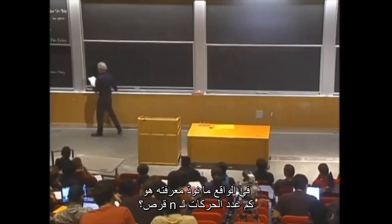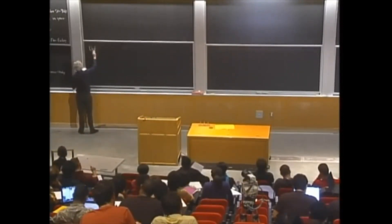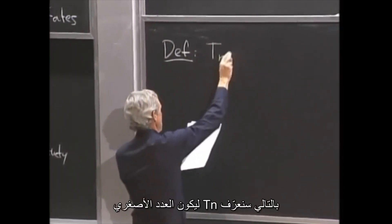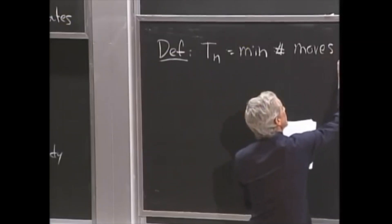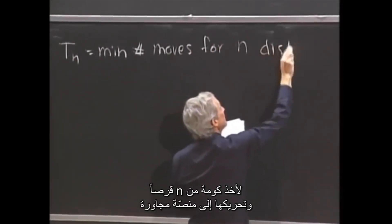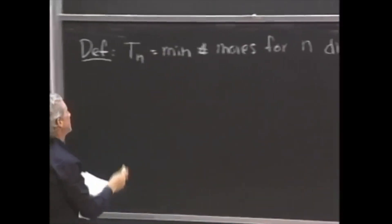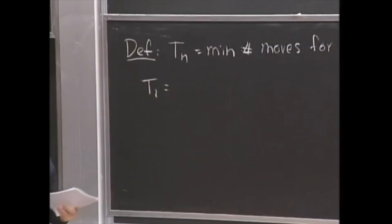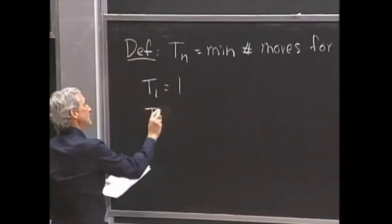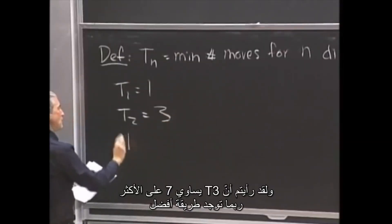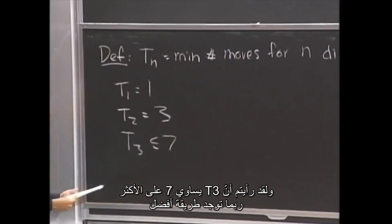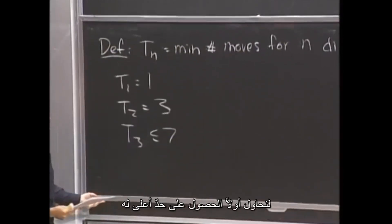What we'd like to know is how many moves for n disks — and is it even finite? We define T_n to be the minimum number of moves to take a stack of n disks and move them to an adjacent peg. For example, T_1 is 1 — just move it. T_2 is 3: move the little guy, move the base, move the little guy back on top. And we've seen that T_3 is at most 7. Maybe there's a better way — let's first get an upper bound.